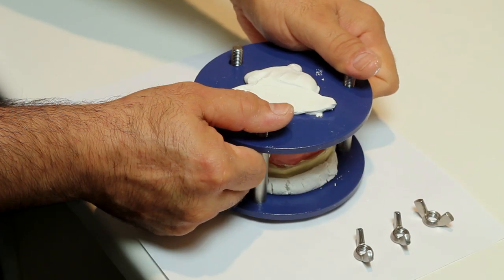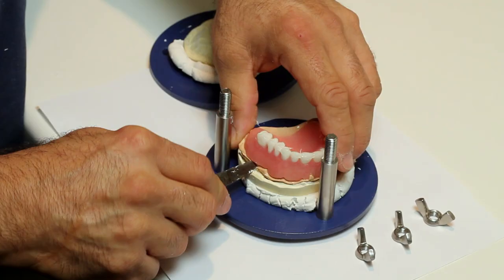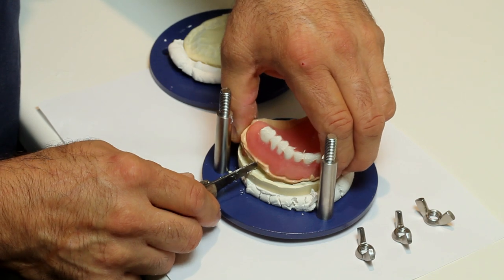Open the jig by unfastening the wing nuts. Carefully remove the denture from the model and index.